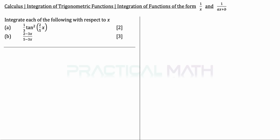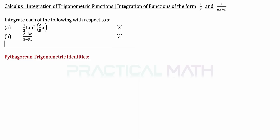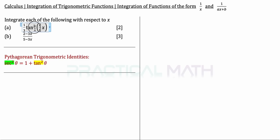Let us begin these questions. In part A, the question gives us an integration which has a tangent square. Before we do any integration, we want to convert out this tangent square. Tangent square is part of the Pythagorean Trigonometric Identities, and we want to use the one which involves tangent square. Basically, sec²θ is the same as 1 + tan²θ. So we want to change out the tangent square, convert it to secant square, and then do the integration — that would be much easier.